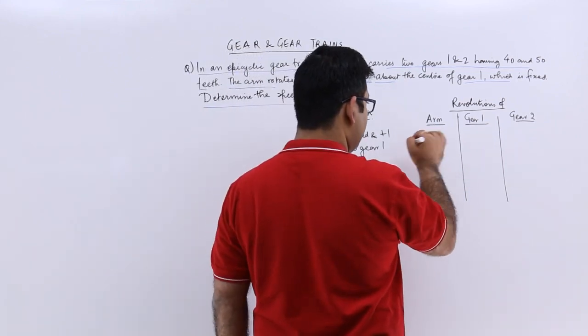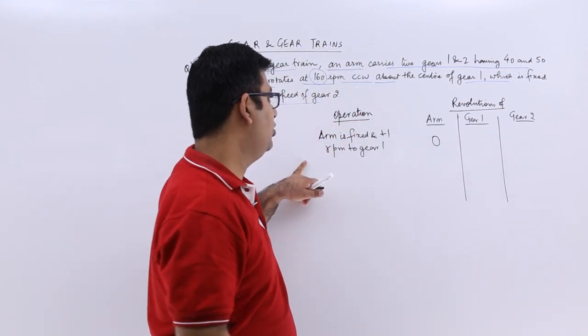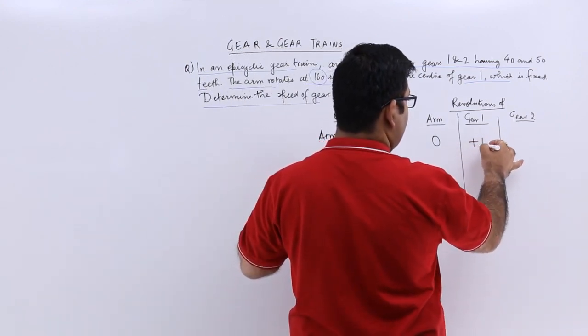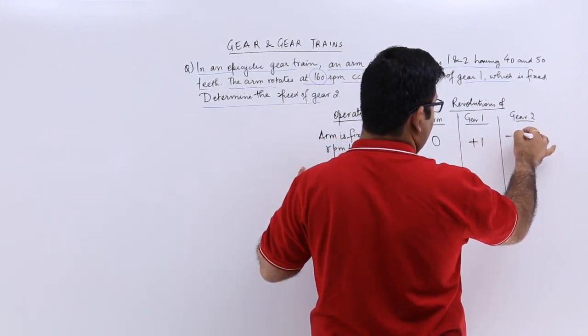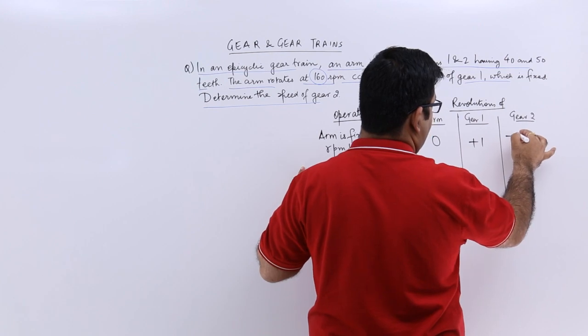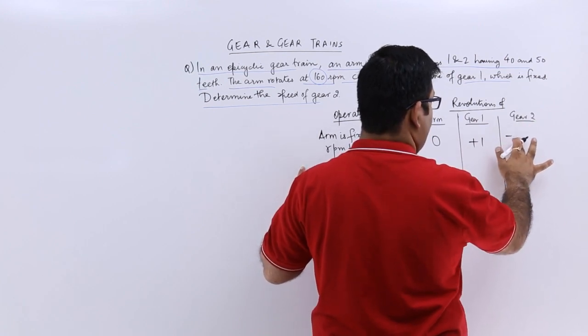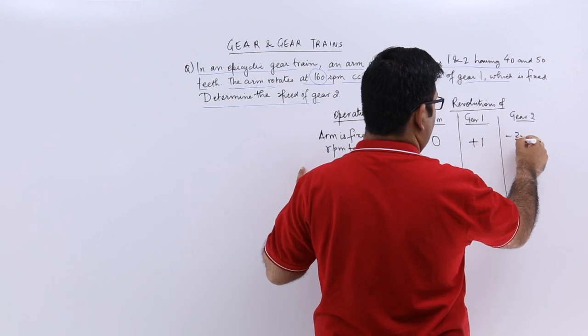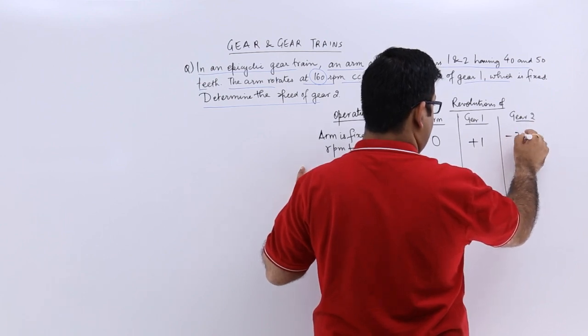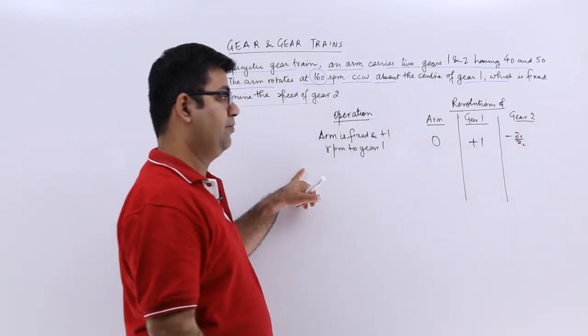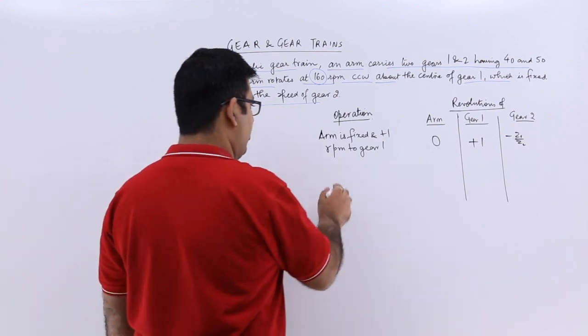So this becomes 0. Gear 1 goes by plus 1 and this goes minus, I would say, n1 that is 1 into z2, or z1 by z2. z1 by z2. Then the next operation would be what?